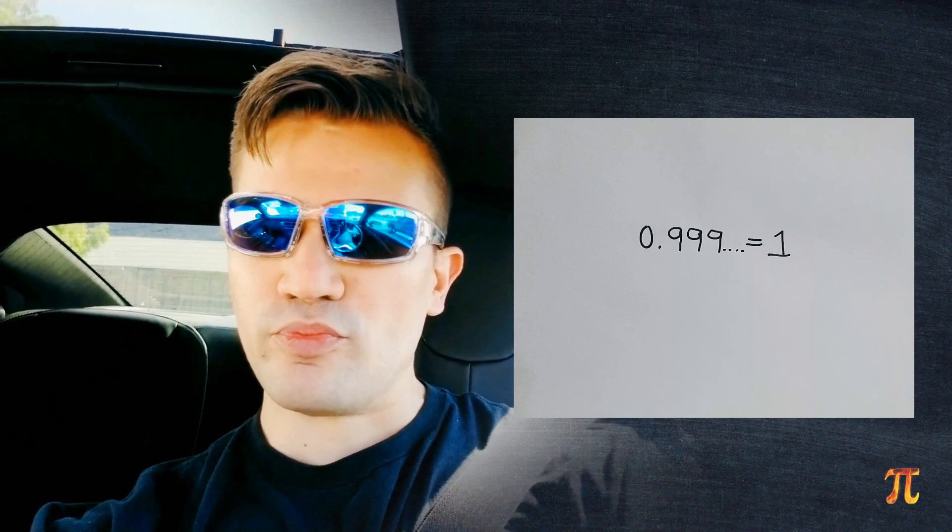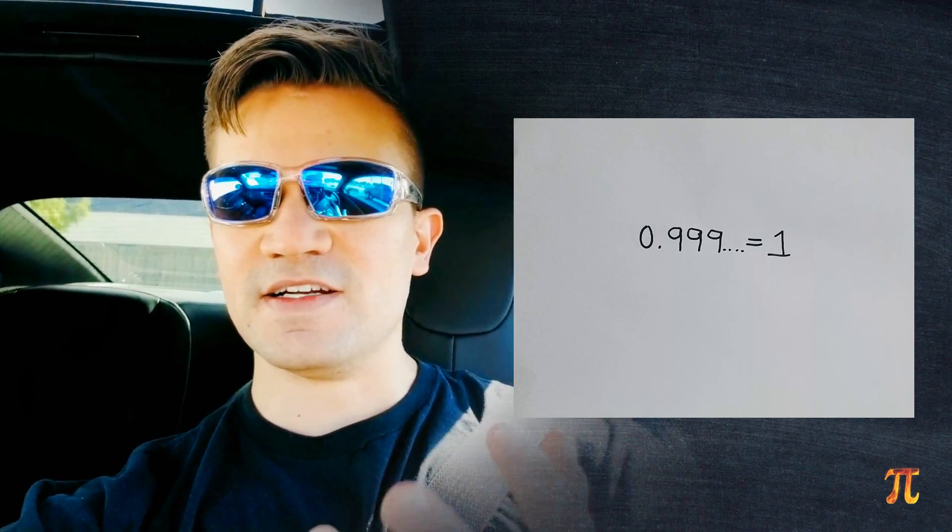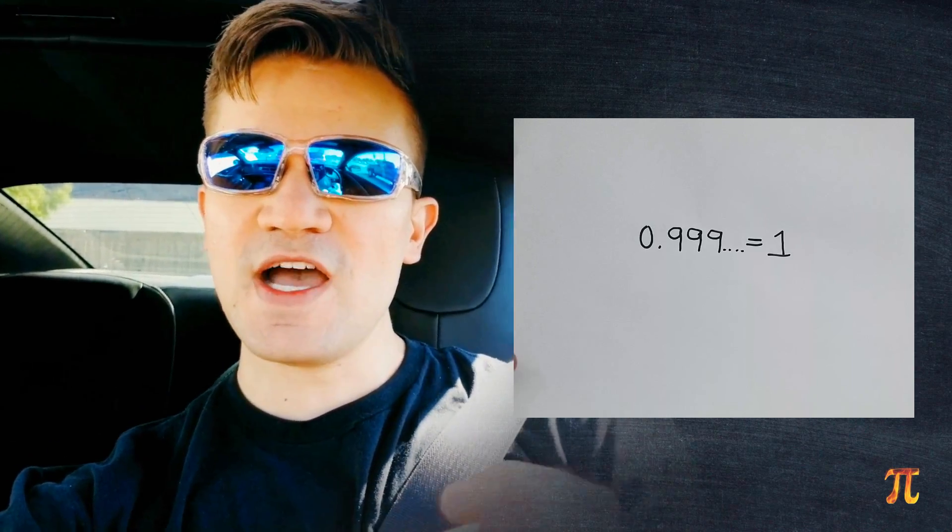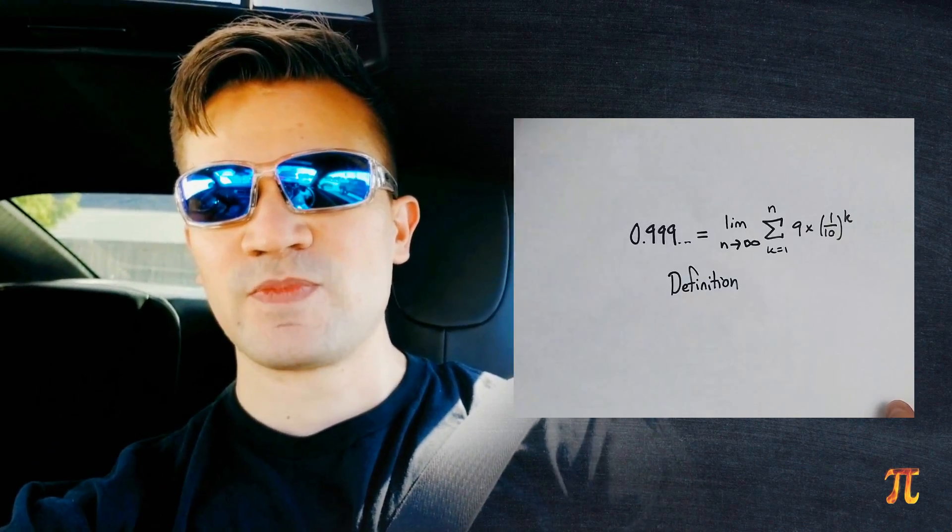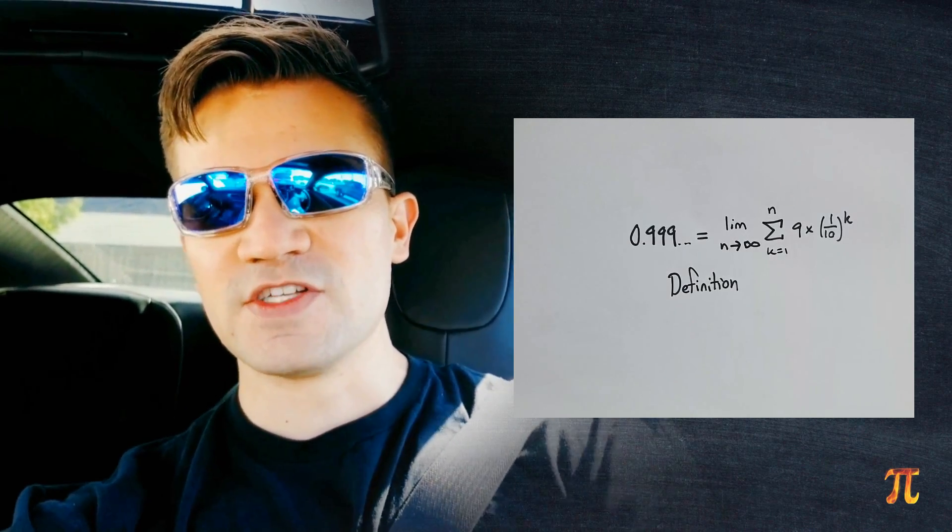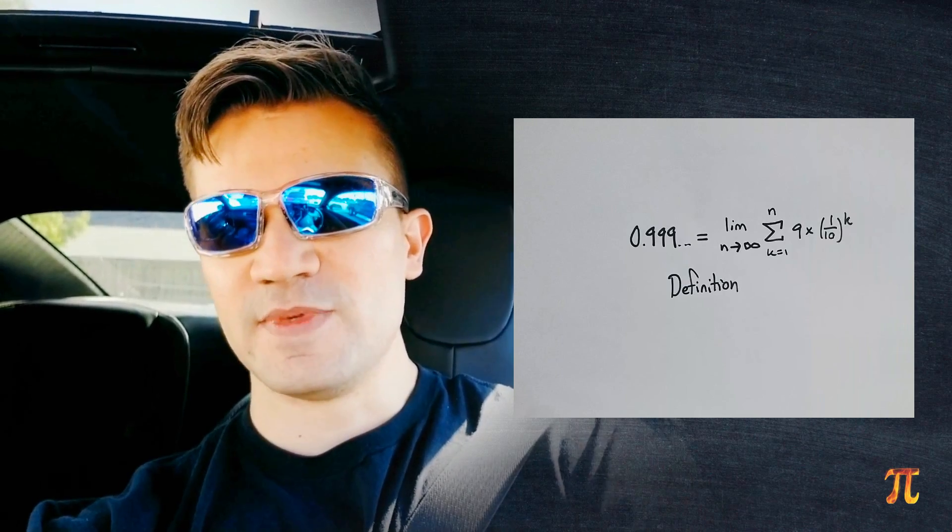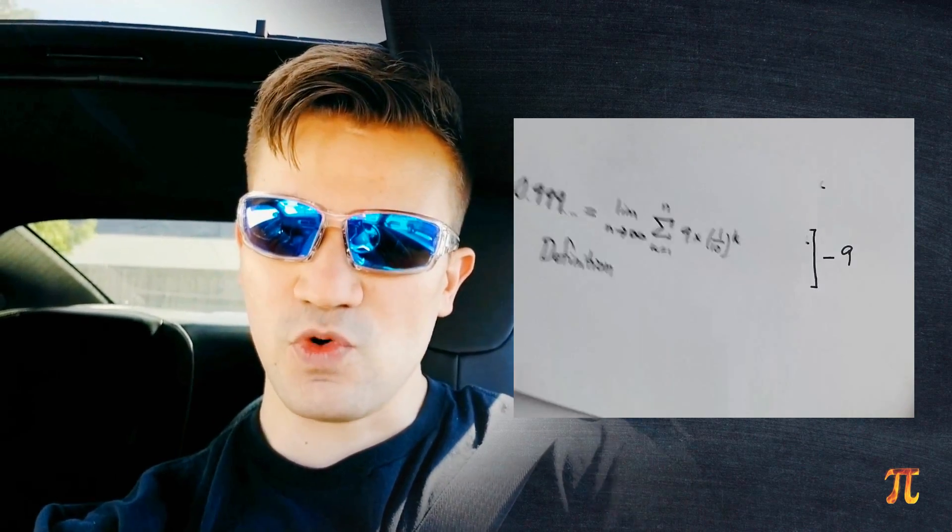The symbol point nine repeating does not have some inherent identity. It is nothing more than what we define it to be. And in the case of decimal numbers we define these infinite decimals to be the limit of a certain series. And in the case of point nine repeating, this limit is one. Therefore, point nine repeating is equal to one.